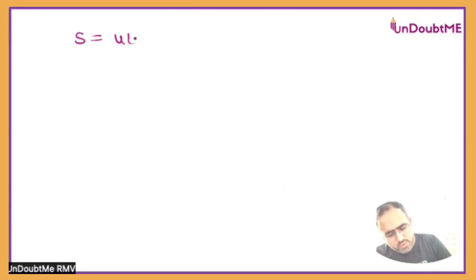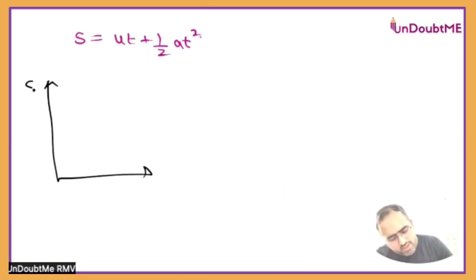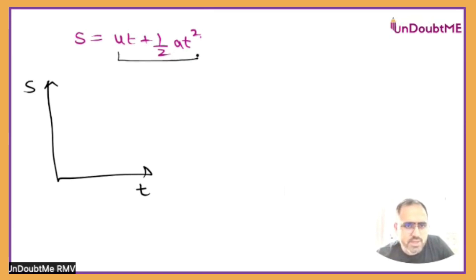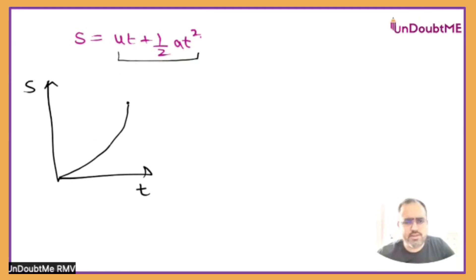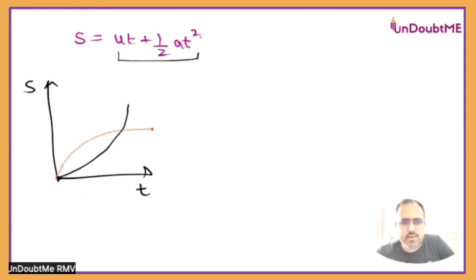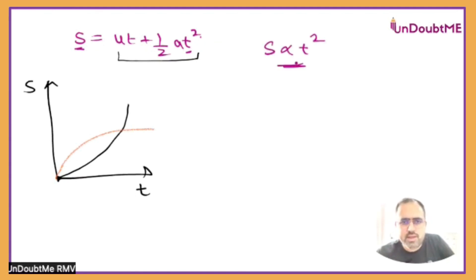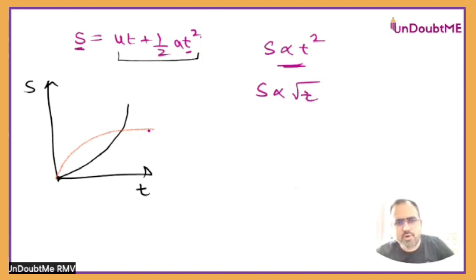The second equation is S is equal to UT plus half aT squared. What are the different variety of graphs we can create from here? One will be a graph of S versus T. If you draw a graph of S versus T, you can see that this is a quadratic equation — look at the T squared term. So you are going to get a curve, and that curve will be an upward parabola. When T is zero, S will be zero. The reason it curves upward and not the other way is because S is directly proportional to T squared; if it were proportional to root T, it would be the other shape.